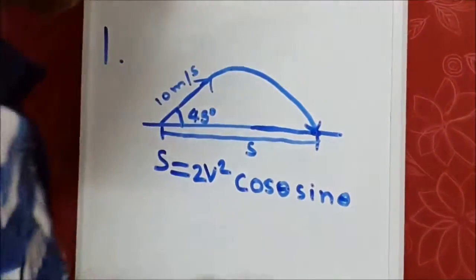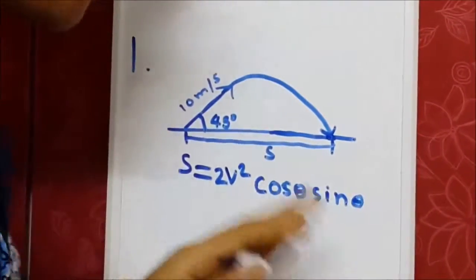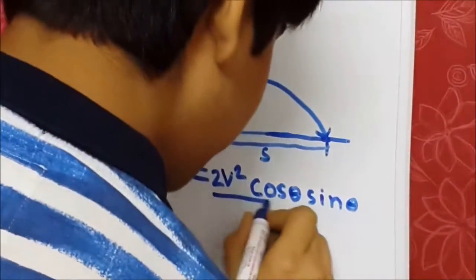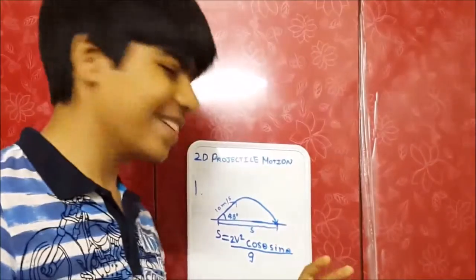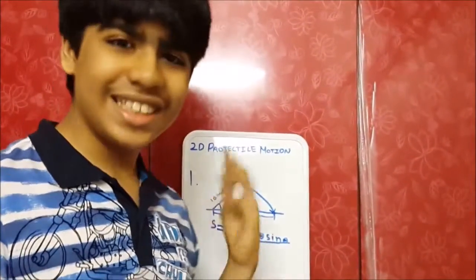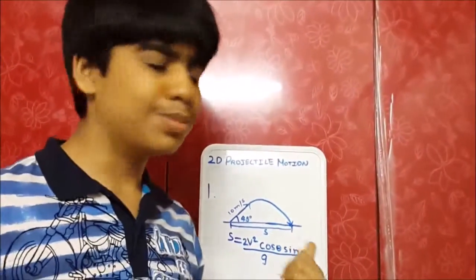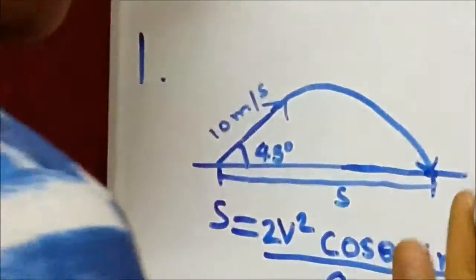You may have learnt it as sin theta times cos theta but it's the same commutative property. Divided by g. And now we're considering it to be on Earth where there's no atmosphere because we're ignoring the air resistance. So yeah, it's kind of odd that there's no atmosphere on the Earth but we are going to do it just for this problem's sake.